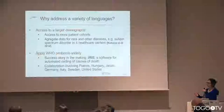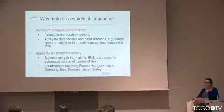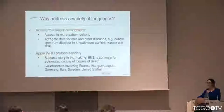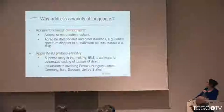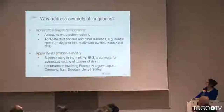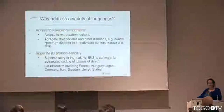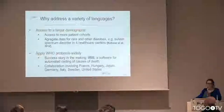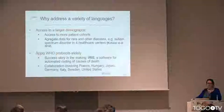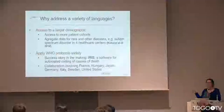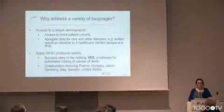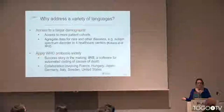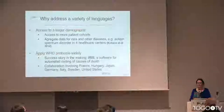Some examples where this might be helpful: for research on rare diseases, a study conducted in 2012 focused on autism spectrum disorder in four different healthcare centers showed that it was useful to have data from these different centers to get more information about the disease.